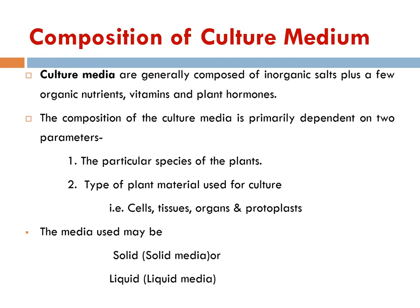The culture media composition depends on two parameters. First, the particular species of the plant for which we are using tissue culture. Second, the type of material used for culture — it can be tissue, organs, protoplasts, or seeds. The material can be grown in solid media, using solidifying agents, or in liquid or semi-solid media.